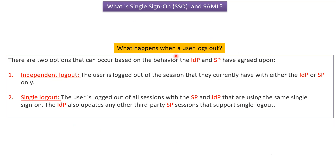In the case of SSO, what happens when a user logs out? There are two options based on the behavior that the IDP and SP have agreed upon. The first one is independent logout, where the user is logged out only of the session they currently have with either the IDP or the SP. The second option is single logout, where the user is logged out of all sessions with the SP and IDP under the same single sign-on, and the IDP also updates any other third-party SP sessions that support single logout.